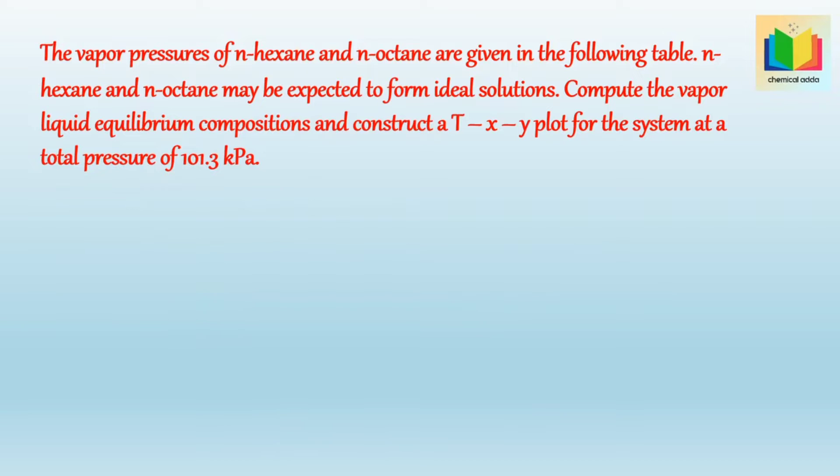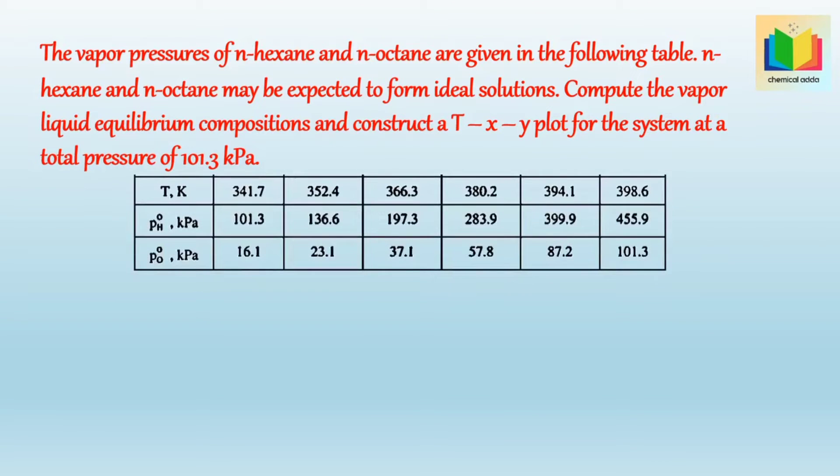As in the table, we have given data as: at specific temperature, PH0 is the vapor pressure of hexane which we assume as PA0, PO0 is the vapor pressure of octane which we assume as PB0. So let's calculate XY values at a specific temperature.